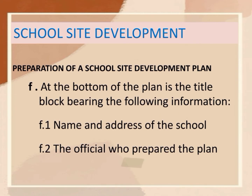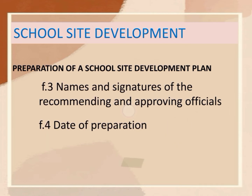At the bottom of the plan is the title block bearing the following information: (1) name of the school and its complete address; (2) the name of the official who prepared the plan; (3) names and signatures of the recommending and approving officials; and (4) date of preparation.